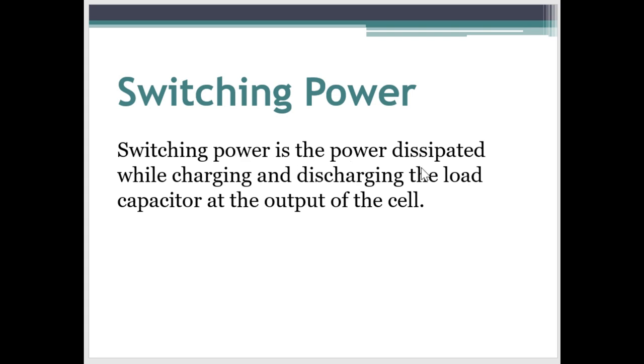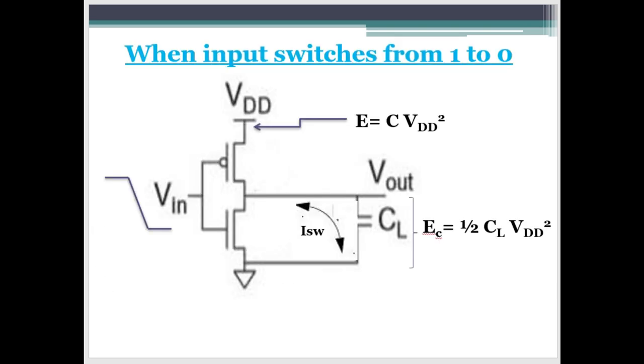Switching power is the power which is dissipated while charging or discharging the load capacitor at the output of the cell. Let's understand this with an example. When input is changing from 1 to 0, the PMOS will turn on. And when PMOS will turn on, it will charge this output load to VDD.